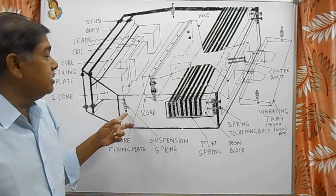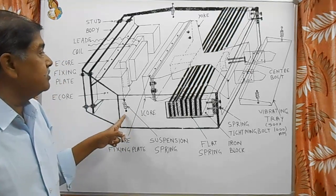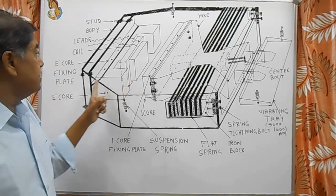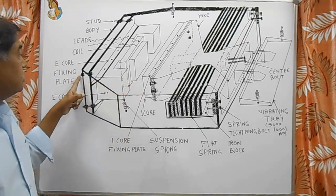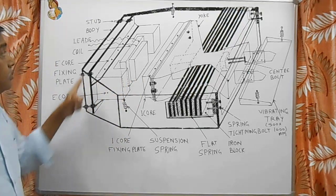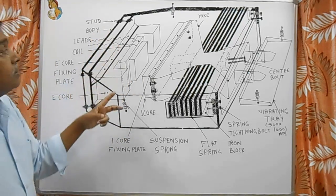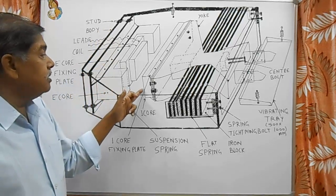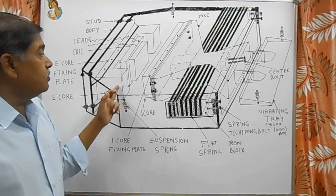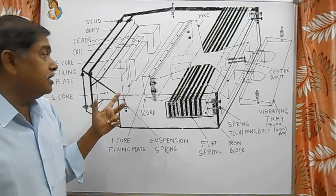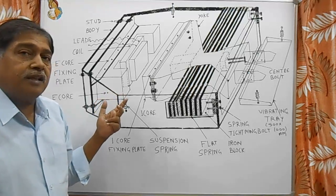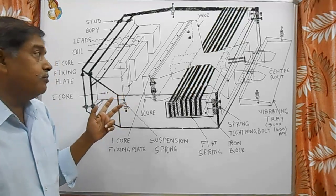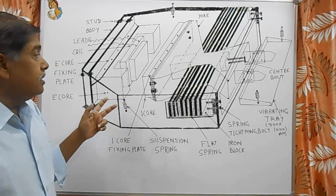The adjustment of feeding is done with the help of adjusting the gap between I-core and E-core with the help of these studs. Here are four studs: one, two, three, and four. These four studs are there to adjust the gap. First we have to check whether the gap between E-core and I-core is correct or not. It should be within 1.5 to 2 mm for proper feeding.